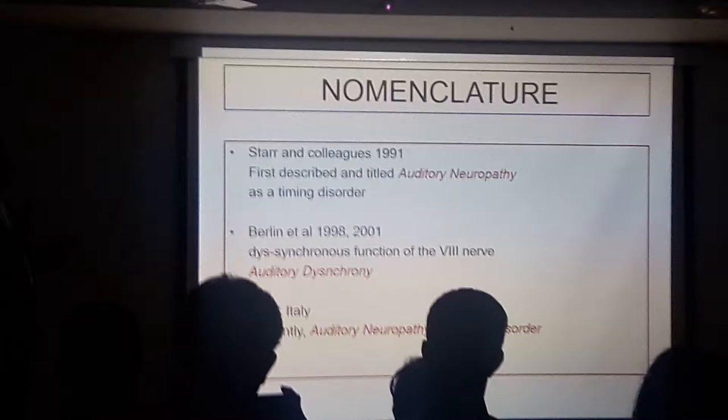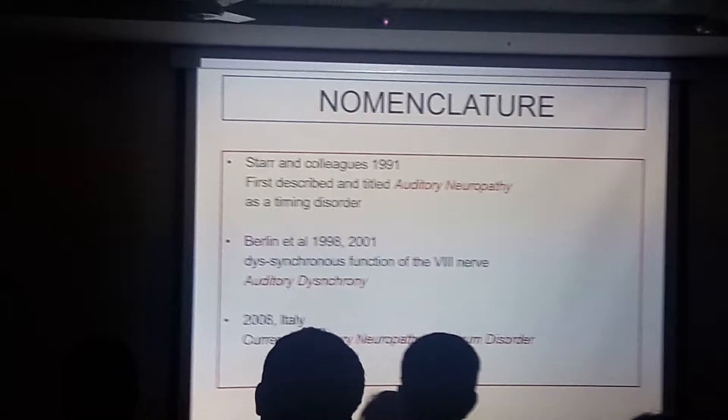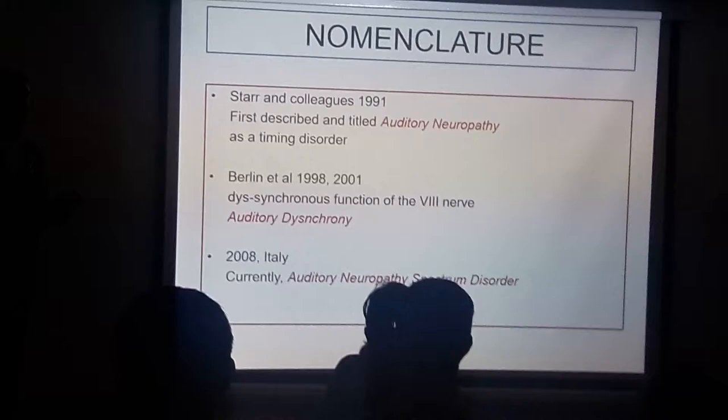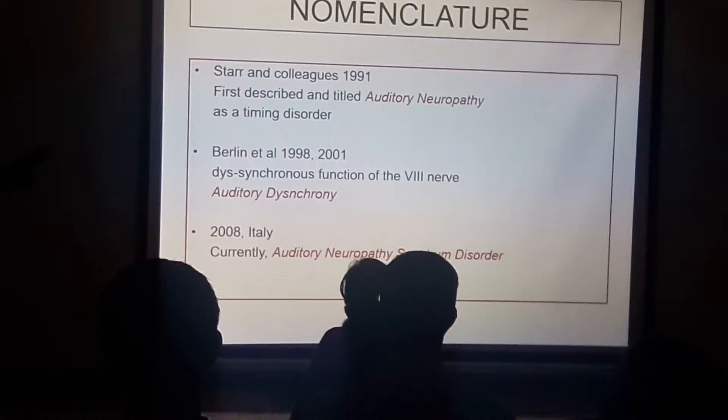The condition was first named in 1991 as 'auditory neuropathy', where they thought it was a timing disorder of the nerve. As data emerged, they also found that it is not just the timing in the nerve that is wrong — it is also the somewhat dysfunctional function of the eighth nerve, so the speech going in would not exactly use the cortex properly. They decided there is some dyssynchrony, and so in about 1998, they called it 'auditory dyssynchrony'.